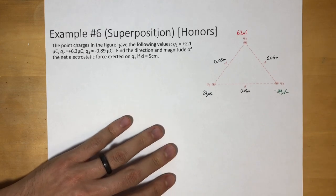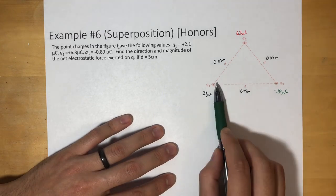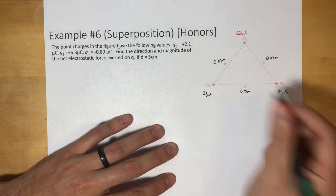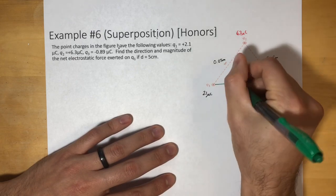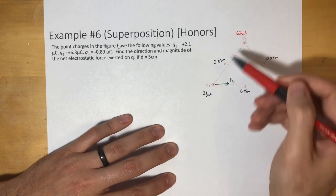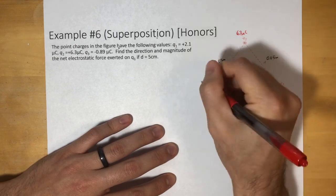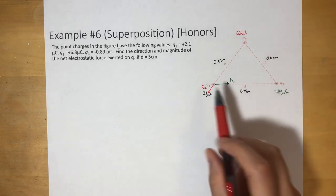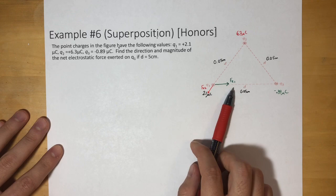What you want to do is draw out the forces first. For Q1 and Q3: since Q3 is negative and Q1 is positive, they attract each other — I'll call that force F_E1. For Q2, since both charges are positive, Q2 pushes Q1 away — I'll call that F_E2. We need to find the magnitudes of both forces.